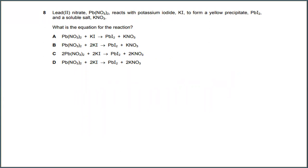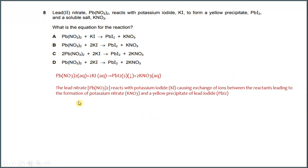Question 8. Lead nitrate, Pb(NO₃)₂, reacts with potassium iodide, KI, to form a yellow precipitate PbI₂ and a soluble salt KNO₃. What is the equation for the reaction? From the above explanation, the reaction involves exchange of ions between the reactants, leading to the formation of potassium nitrate, KNO₃, and a yellow precipitate of lead iodide, PbI₂. The answer for this would be D.